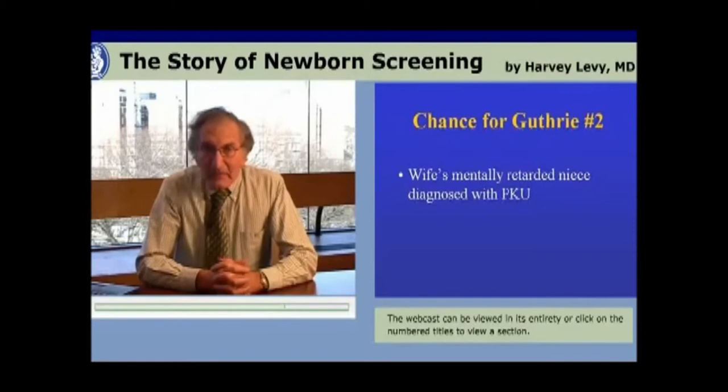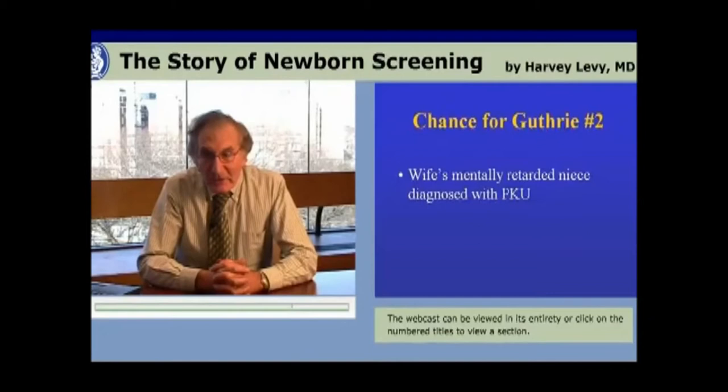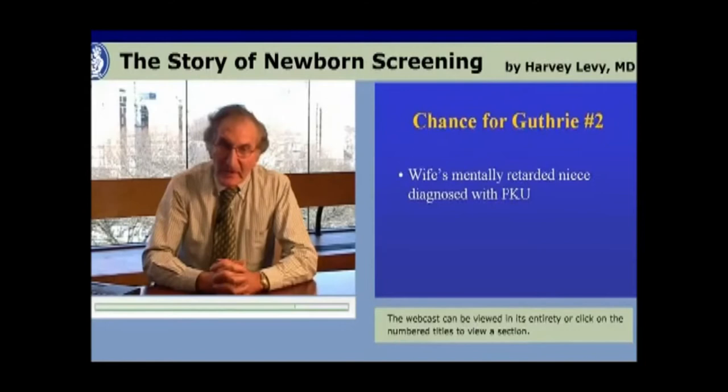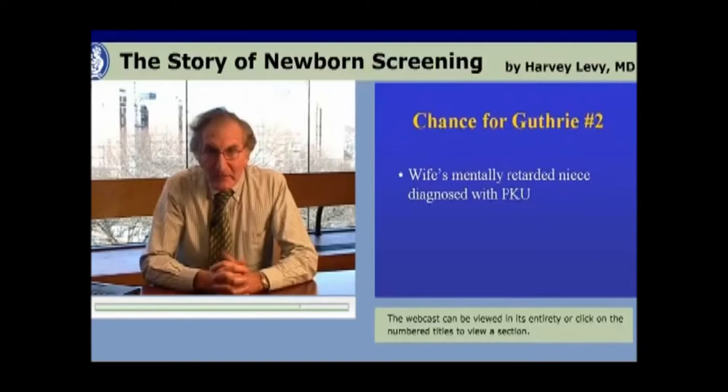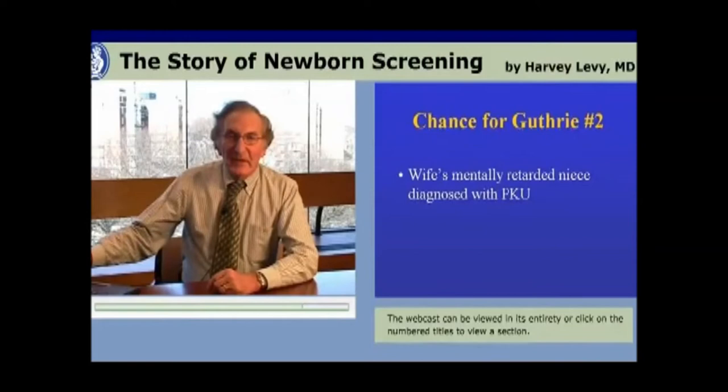The second chance event in Bob Guthrie's development of newborn screening was that one day he and his wife received a call from Minneapolis, Minnesota, informing them that his wife's niece, who was known to be mentally retarded, had just been diagnosed with PKU. This put PKU right in his family and truly stimulated his interest in learning more about PKU and possibly doing something about it.